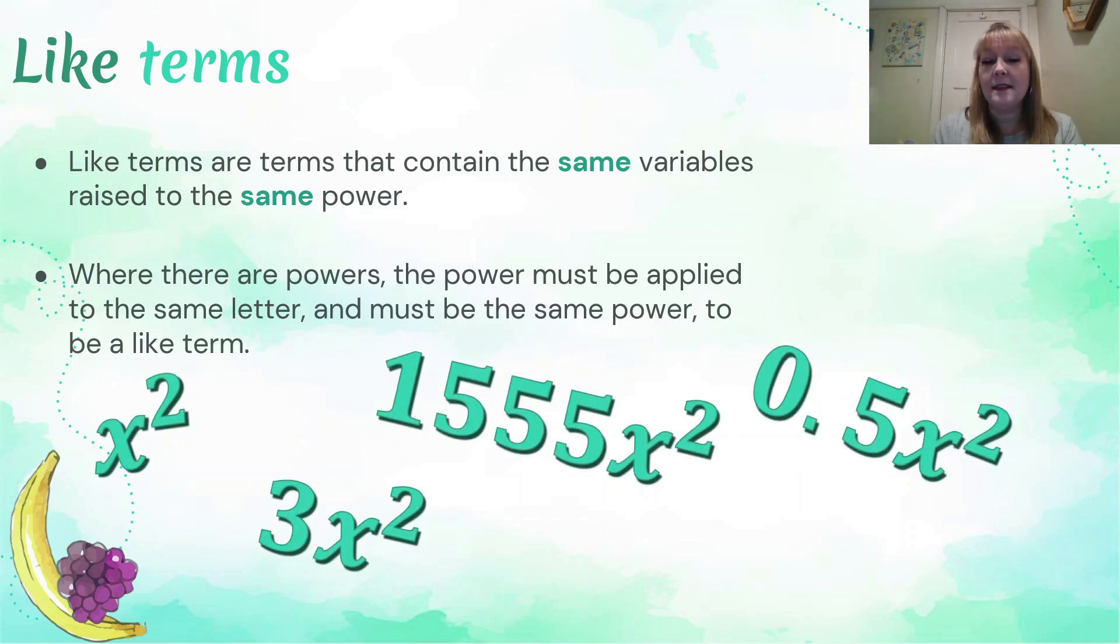For example, these are all like terms: x to the power of 2, or x squared. So it doesn't matter what the coefficient is. In the case of x squared, we've got a coefficient of one. We just typically don't write the one if it's a number in front. We're a little bit lazy with that as well. We've got 3x squared, 1555x squared, and 0.5x squared. So it doesn't matter what that number is in the front, but that power must be the same. So it's not going to be a like term with x cubed, with x to the power of 50, or even x by itself. Only with other x squareds. And once again, it won't be with y squared either. X squared and y squared are not like terms because the letter is different, even though the power is the same.